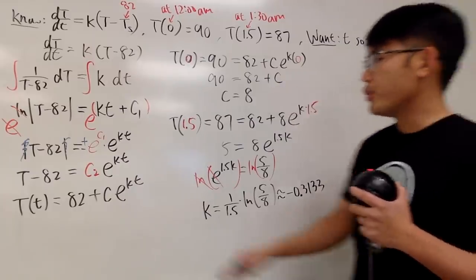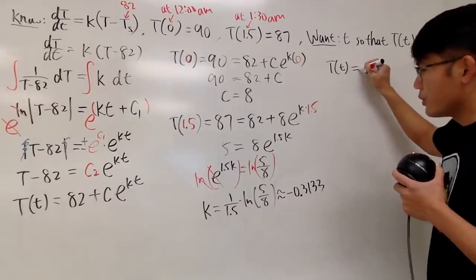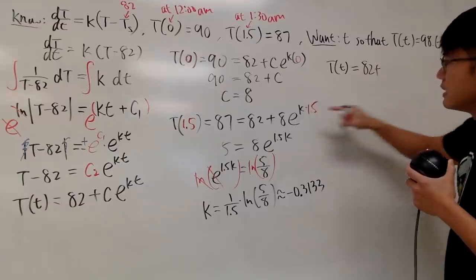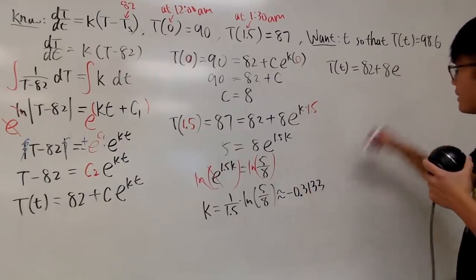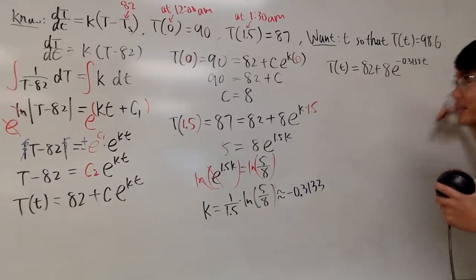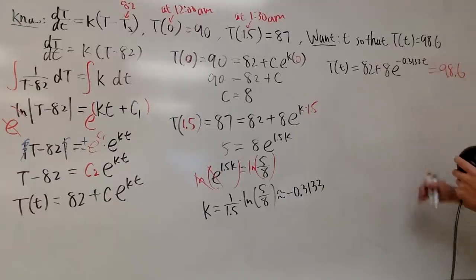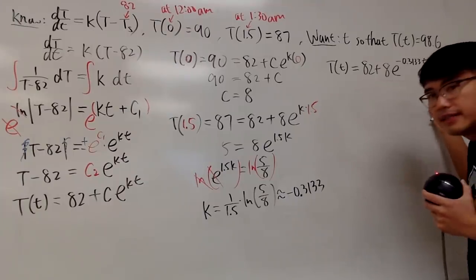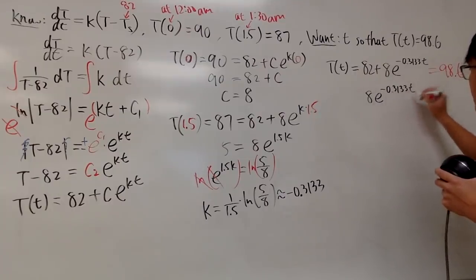We can now plug c = 8 and k ≈ -0.3133 back into the general solution: T(t) = 82 + 8·e^(-0.3133t). We set this equal to the normal body temperature of 98.6: 82 + 8·e^(-0.3133t) = 98.6. Subtracting 82 from both sides gives 8·e^(-0.3133t) = 16.6.